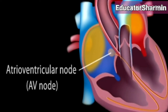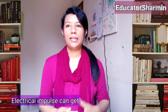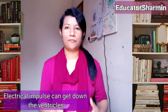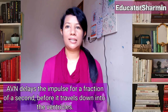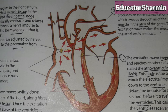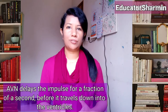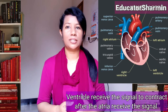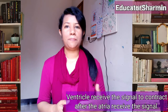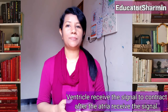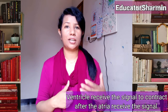The excitation wave reaches another patch of cells called the atrioventricular node, or AVN. The electrical impulse cannot pass directly down to the ventricles. The atrioventricular node delays the impulse for a fraction of a second before it travels down into the ventricles, so that the ventricles receive the signal to contract after the atria have already received their signal.